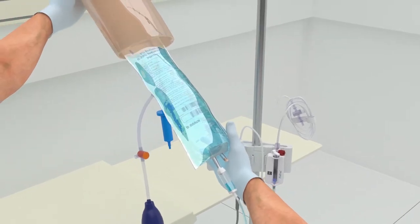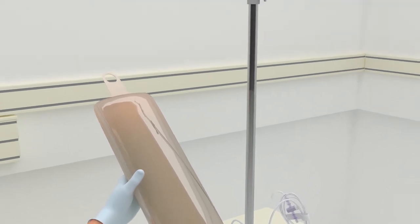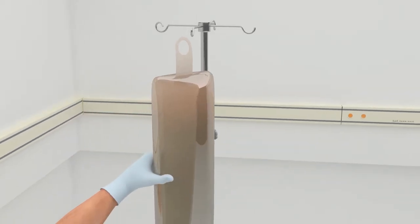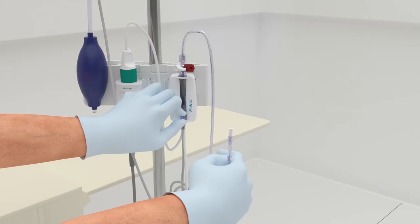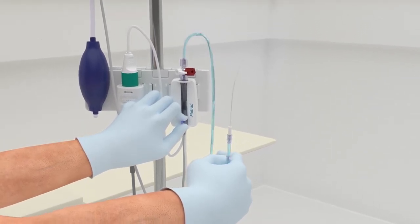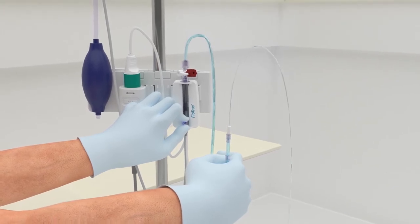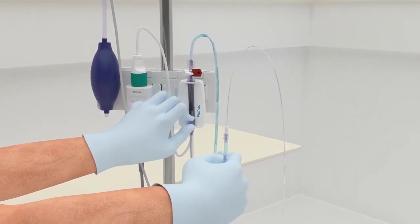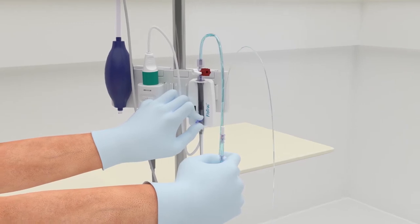Insert the fluid bag into the pressure bag and hang on the IV pole. Do not inflate. With gravity only, no pressure in the bag, flush the FlowTrack sensor, holding the pressure tubing in an upright position until the column of fluid reaches the end of the tubing.